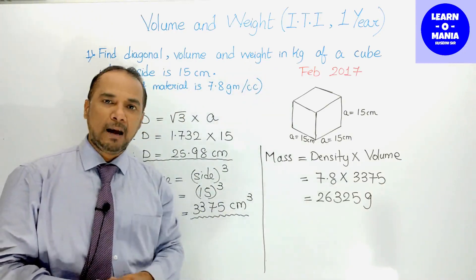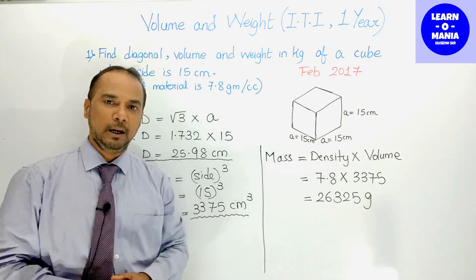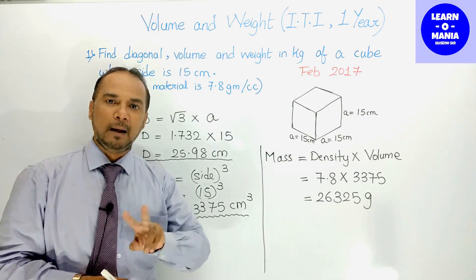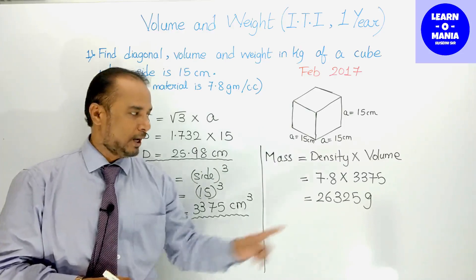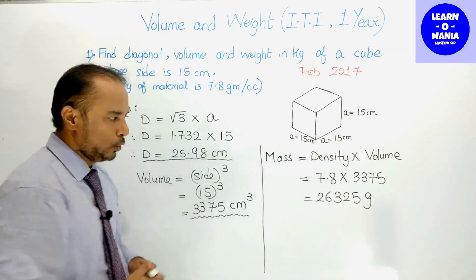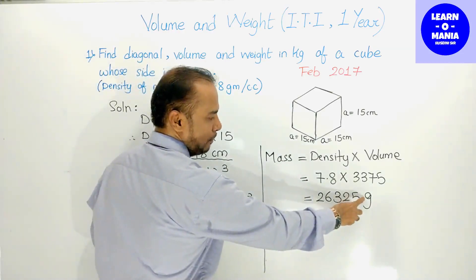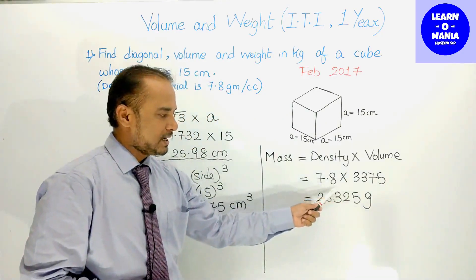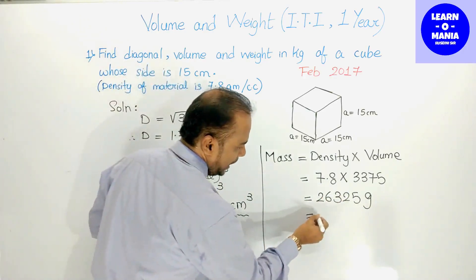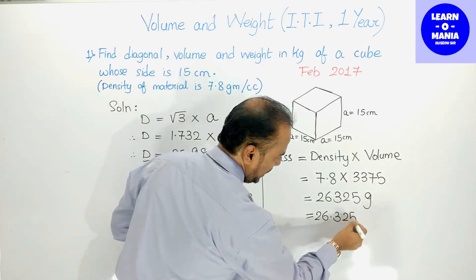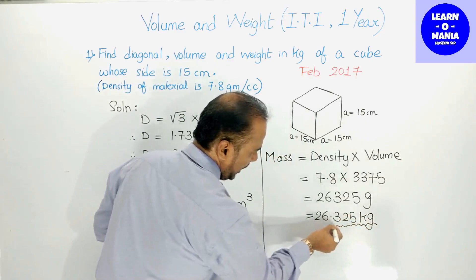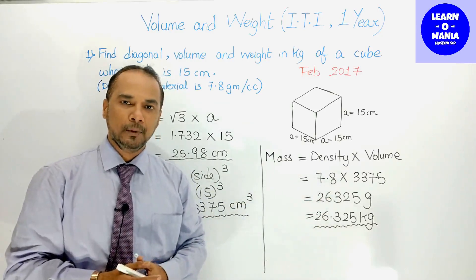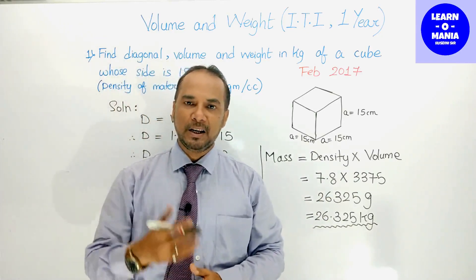लेकिन mass kg में चाहिए, यह grams में है। Gram को kilogram में convert करने के लिए divide करेंगे 1000 के साथ। Orally decimal point को three places आगे shift कर लेंगे, तो kilogram में answer हो जाएगा 26.325 kg। यह है उस cube का mass kg में। This is the first sum — चलिए आगे बढ़ते हैं।